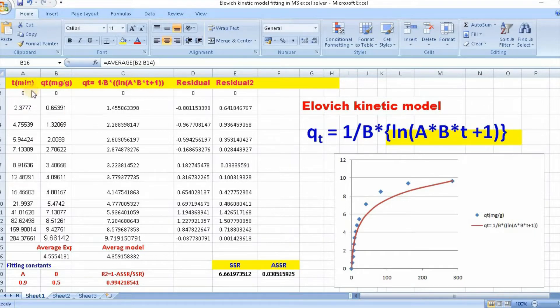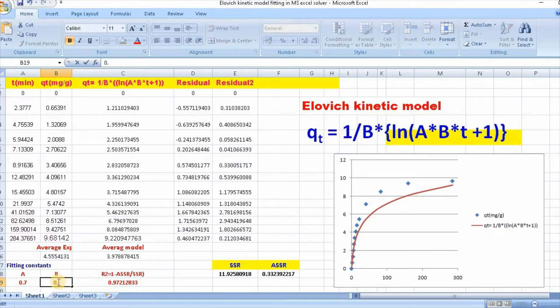In order to fit, I have taken adsorption kinetic data for equilibration time and amount adsorbed at time t. You need to write this function here, equal to 1 by b into ln a b t plus 1. You need to also put fitting constants a and b. Initially, you need to put some value. For example, I put it 7 and then I also put it 4.